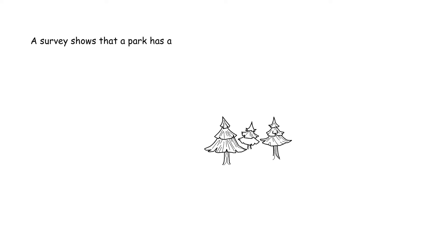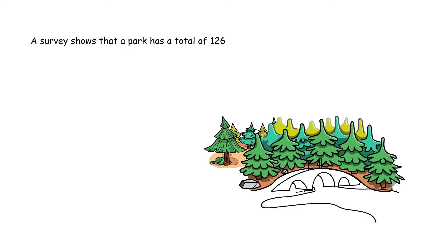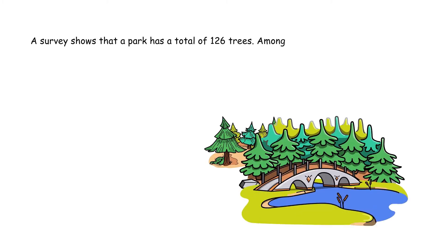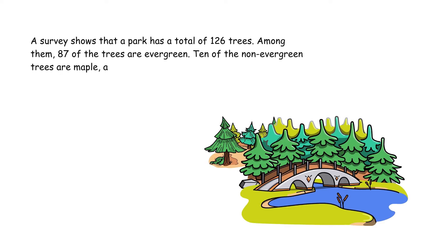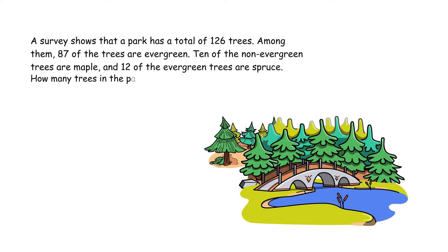A survey shows that a park has a total of 126 trees. Among them, 87 of the trees are evergreen. 10 of the non-evergreen trees are maple. And 12 of the evergreen trees are spruce. How many trees in the park are neither maple nor spruce?